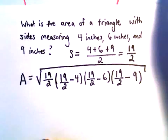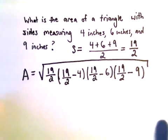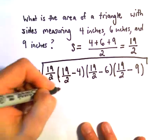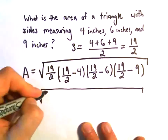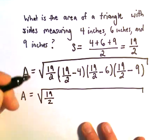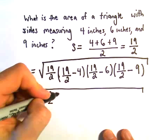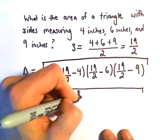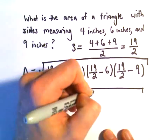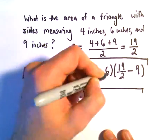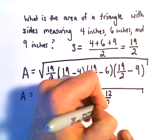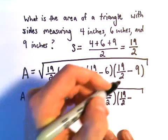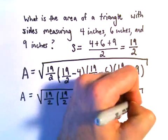So now it's just a bit of simplification. We've got 19 over 2. We could always make the 4 into an 8 over 2, so minus 8 over 2. We've got 19 over 2. We could make the 6 into 12 over 2. We've got 19 over 2. We could subtract away 18 over 2.